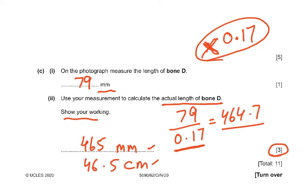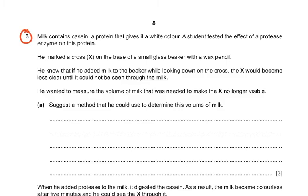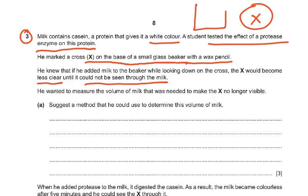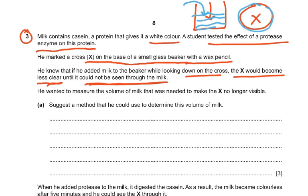That finishes question 2. Question 3: milk contains casein, a protein that gives it a white color. A student tested the effect of a protease enzyme on this protein. He marked an X on the base of a small glass beaker with a wax pencil. If milk is added while looking down, the X becomes less clear and eventually cannot be seen through the milk.